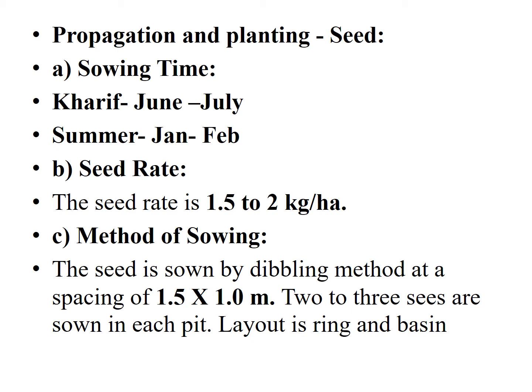Musk melon is mainly propagated by seeds. The sowing time is mainly in the rainy season — June and July — and in the summer season — January and February. The seed rate required is 1.5 to 2 kg per hectare.